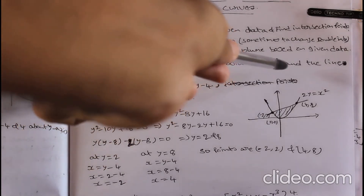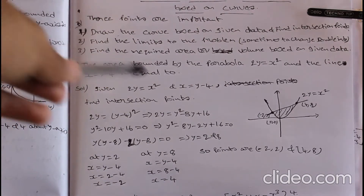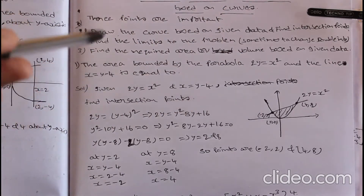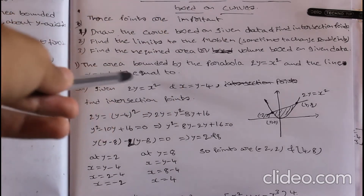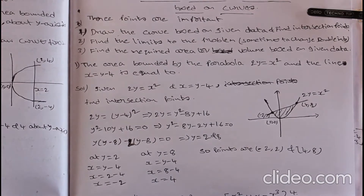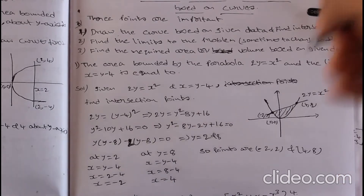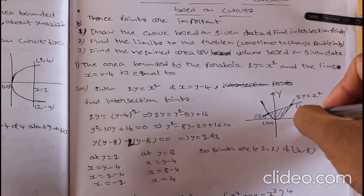Question one: find the area bounded by the parabola 2y = x² and the line x = y - 4. Given: the parabola is 2y = x² and the line is x = y - 4. Now let us see how to draw 2y = x².